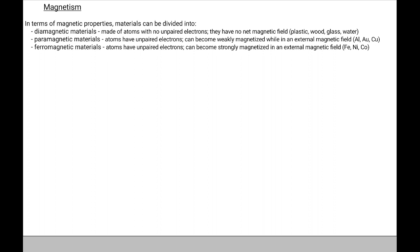Ferromagnetic materials also have atoms with unpaired electrons, just like paramagnetic materials. But unlike paramagnetic materials, ferromagnetic materials can be strongly magnetized in an external magnetic field or at a specific high temperature. Examples of ferromagnetic materials are iron, nickel, and cobalt.